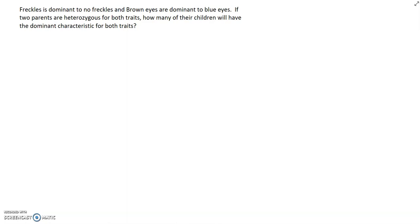So let's work through a few more example problems. In this one, we know that freckles is dominant to no freckles, and brown eyes are dominant to blue eyes. If two parents are heterozygous for both traits, how many of their children will have the dominant characteristic for both traits? So the dominant characteristic would mean they're going to be freckled and have brown eyes.